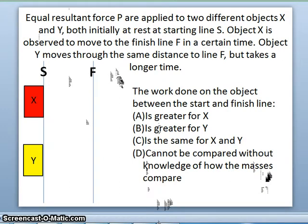Let's look at this problem. This problem says that an equal resultant force P is applied to two different objects, x and y, that are both initially at rest and they start from the starting line S. Object x is observed to move to the finish line in a certain time, and object y moves the same distance to line F, but it takes a longer time. The problem asks us to compare the work done on each of these boxes.